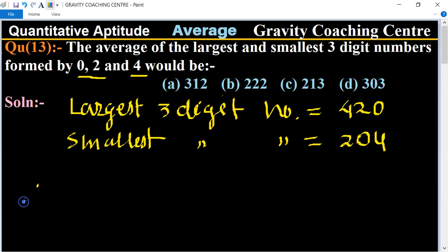Therefore, the average of these numbers equals 420 plus 204 divided by the number of observations, which is 2.